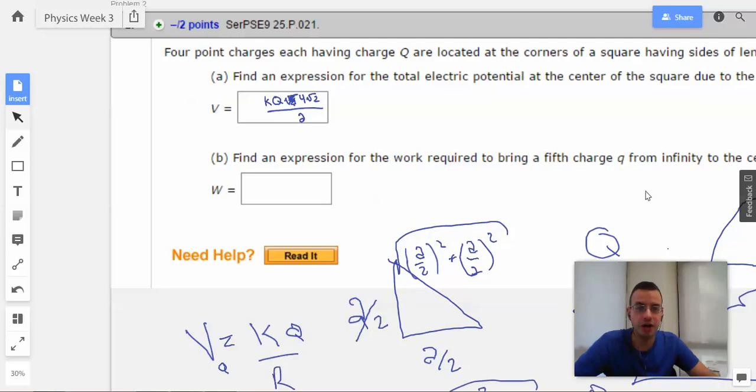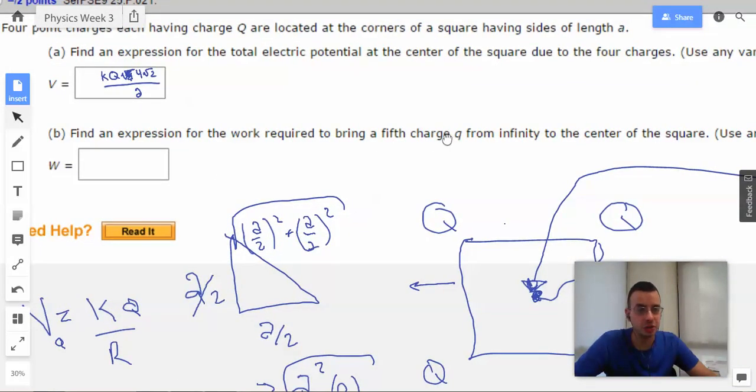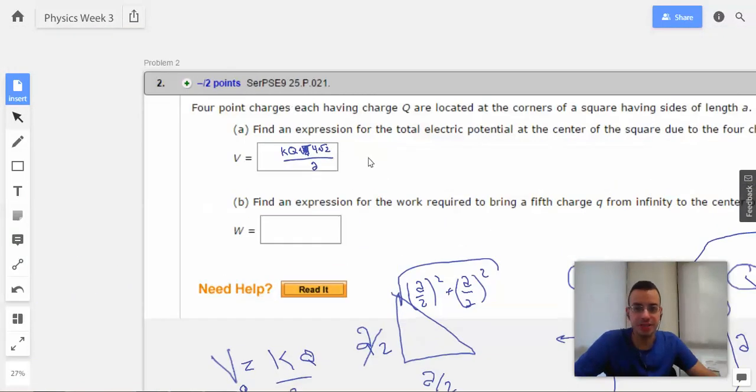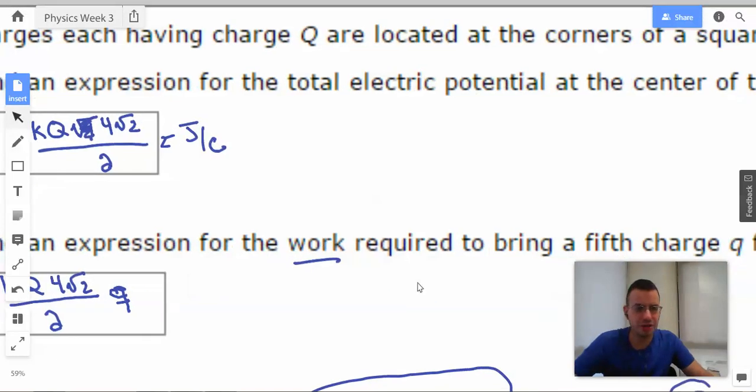Find an expression for the work required to bring a fifth charge Q from infinity to the center of the square. Use any variable or something, something to say above. Alright, so this is a basic understanding of life. So this is a measurement of joules per coulomb, which is volts. So we multiply joules per coulomb by coulombs, then we get joules, which is work. So what we're going to do is we're going to rewrite the exact equation we just had over A, and then multiply it by Q, the charge that we're bringing in. Because this is the whole idea of what we're doing.